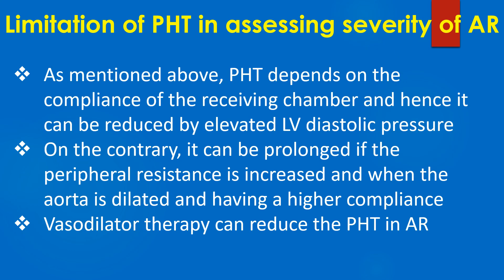Pressure half time depends on the compliance of the receiving chamber and hence it can be reduced by elevated left ventricular diastolic pressure. On the contrary, it can be prolonged if peripheral resistance is increased and when the aorta is dilated and has a higher compliance. Vasodilator therapy can also reduce the pressure half time in aortic regurgitation.